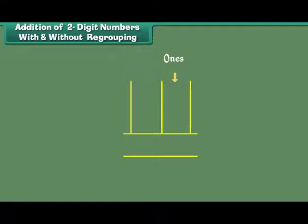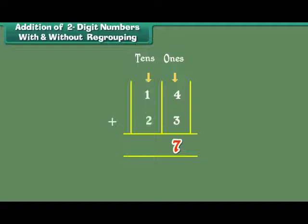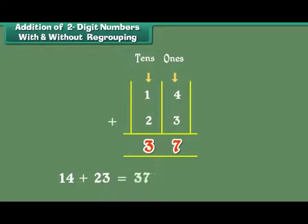The digits at the 1s place are 4 and 3. 4 plus 3 is equal to 7. The digits at the 10s place are 1 and 2. 1 plus 2 is equal to 3. Therefore, 14 plus 23 is equal to 37.